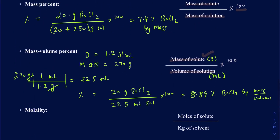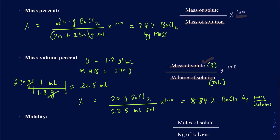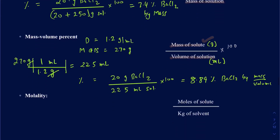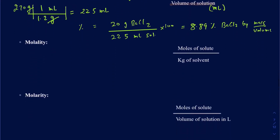The mass percent and the mass volume percent are going to be close to one another, but not the same. The only time they would be equal is if your solution is fairly dilute — otherwise they'll be close but not exactly the same.